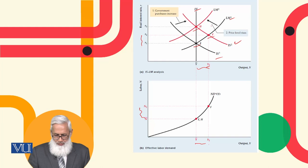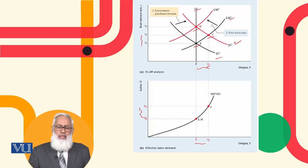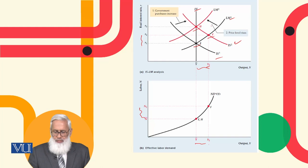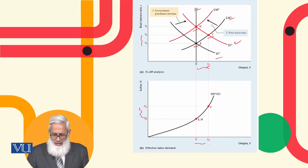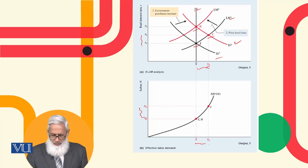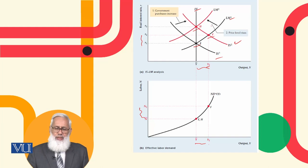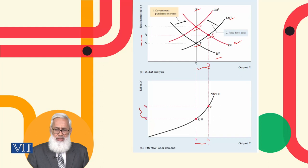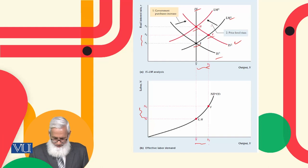At point H, the output level returns to its original level, the same as the first equilibrium, but the real interest rate will be higher. At the new long-run equilibrium, the employment level and output level will show no change compared to the original. This is the fiscal policy impact in the Keynesian IS-LM model.